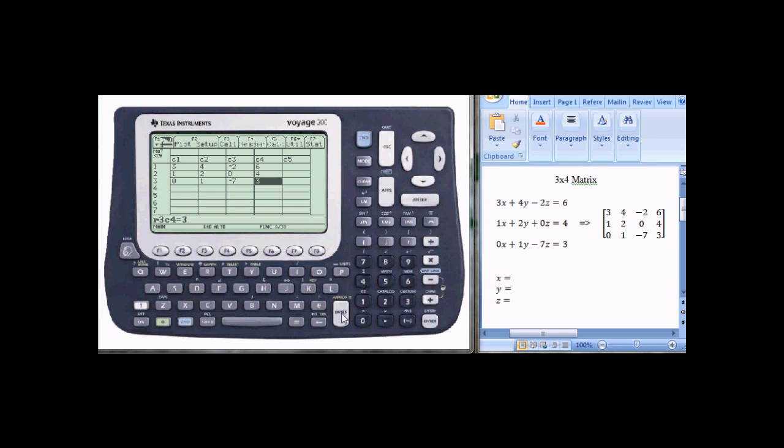And now my matrix is saved under M1. I can move back to the main screen by hitting 2nd and Apps. This switches me back to the home screen.